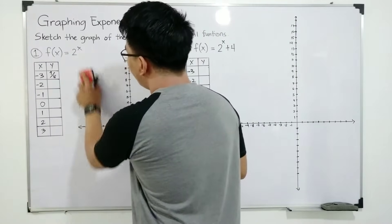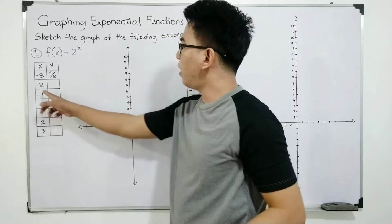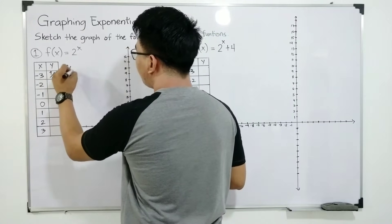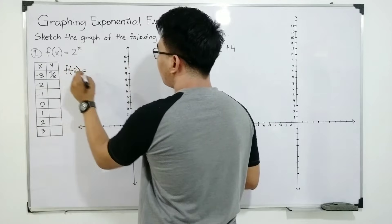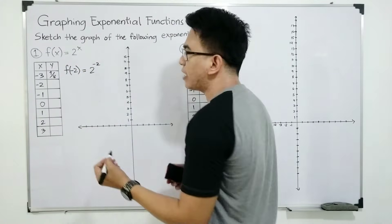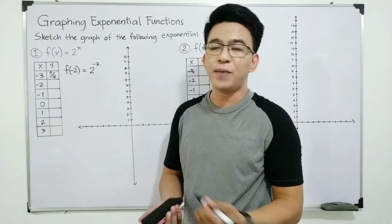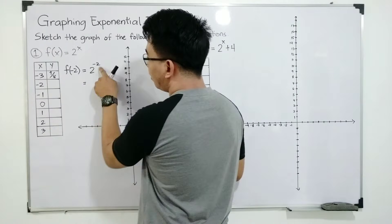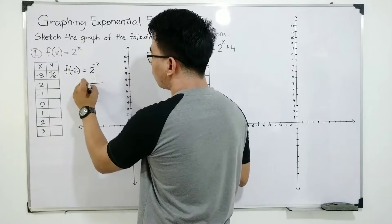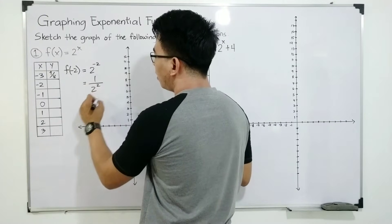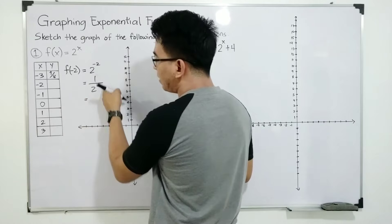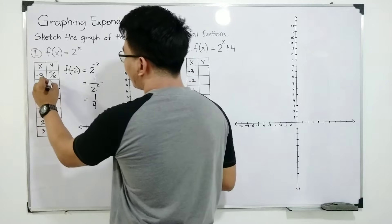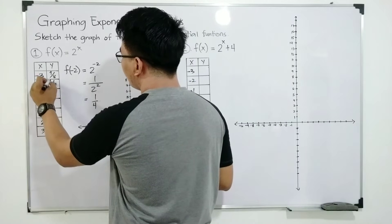What if your x is negative 2? So we will substitute. We have f of negative 2 is equal to 2 raised to negative 2. Negative exponent, gawin natin positive, which will become 1 over 2 raised to 2, and this will be simplified as 1 over 4. So the second value ng y is 1 over 4.